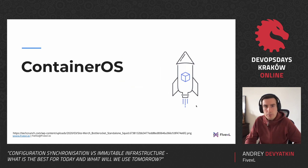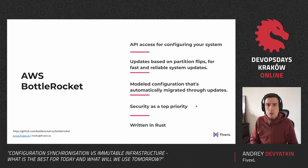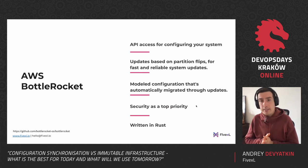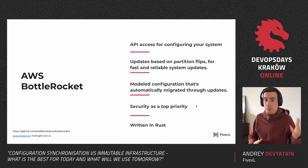Can we do even better than that? Yes — there are container operating systems. I'm using AWS BottleRocket as an example; there are others like CoreOS, Red Hat Atomic, and a couple more. Just look at the description and principles of AWS BottleRocket: it's API access to configure your system — no running shell, nothing like that. You're just calling the API and providing a TOML file describing how the system should be configured.